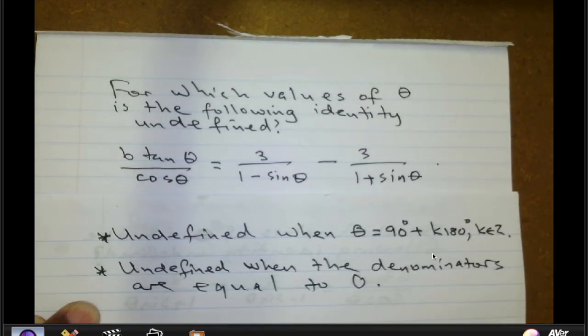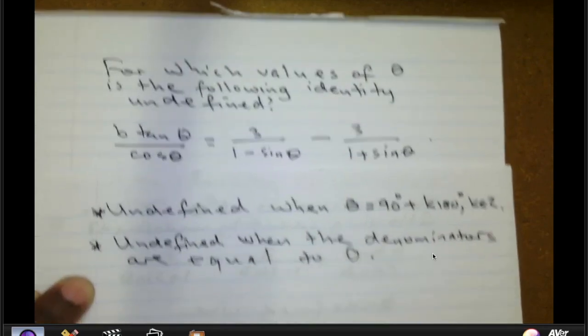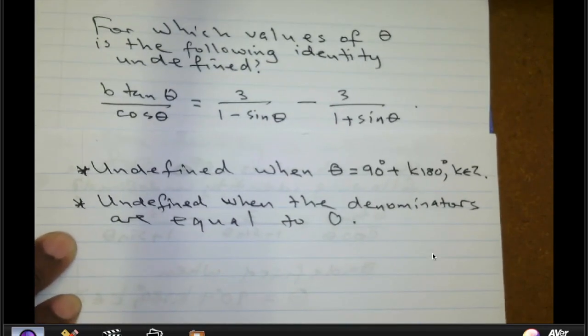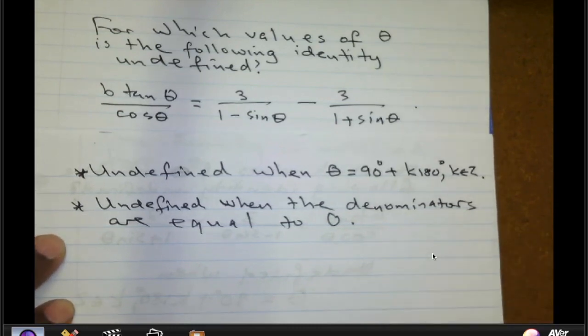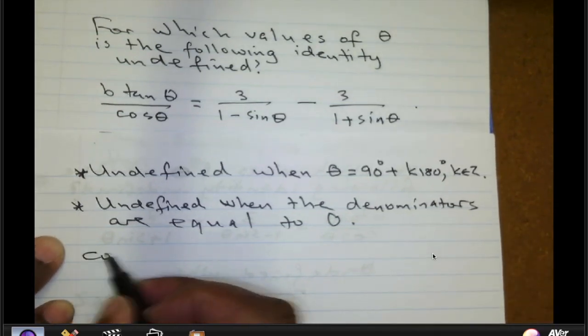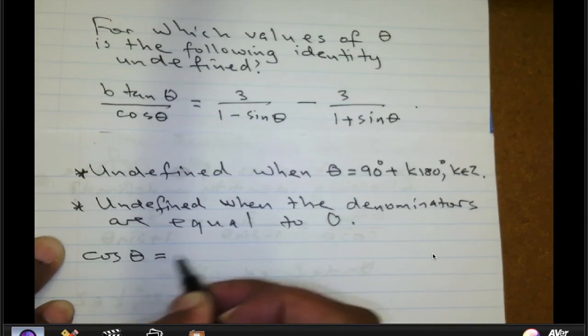So all we need to do is to make our denominators equal to 0 and then solve that particular equation. The values of theta that we get there will make the whole identity undefined. So the first equation we need to solve will be cosine of theta is equal to 0.